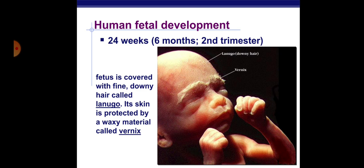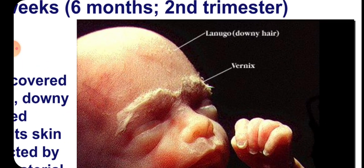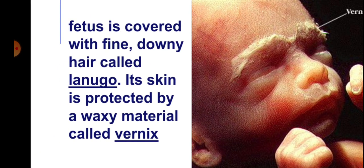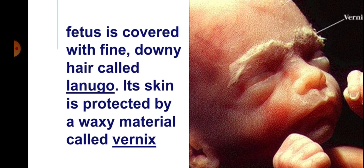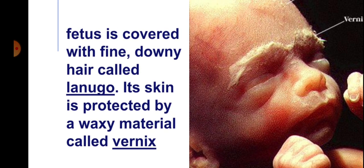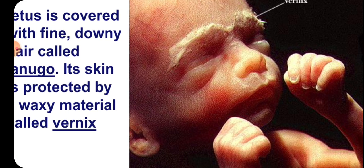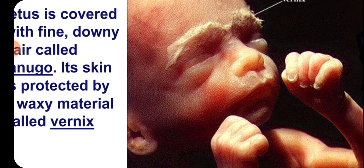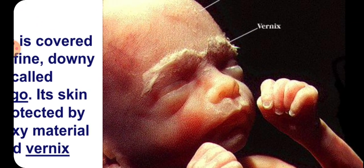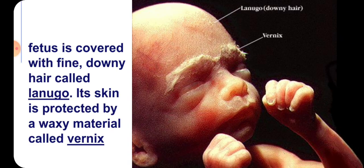At 24 weeks, six months — also known as the second trimester — the fetus is covered with fine downy hair called lanugo. You can see the lanugo here. The skin is protected by a waxy material called vernix, which you can see in this image.